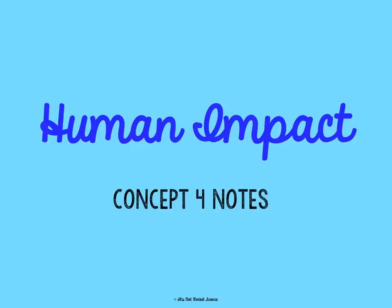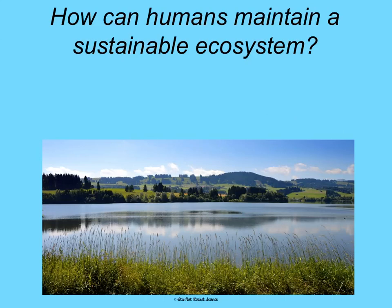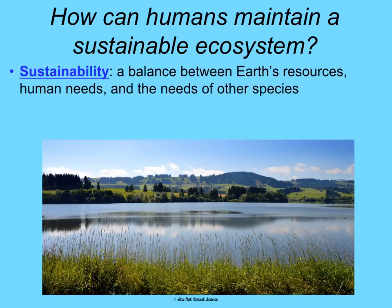Concept four — we're going to be talking about human impact on the environment. How can humans maintain a sustainable ecosystem? That's the driving question. First we need to know what sustainability is. It's a balance between Earth's resources — what Earth has — human needs, what we need or want, and the needs of all the other living things on Earth.